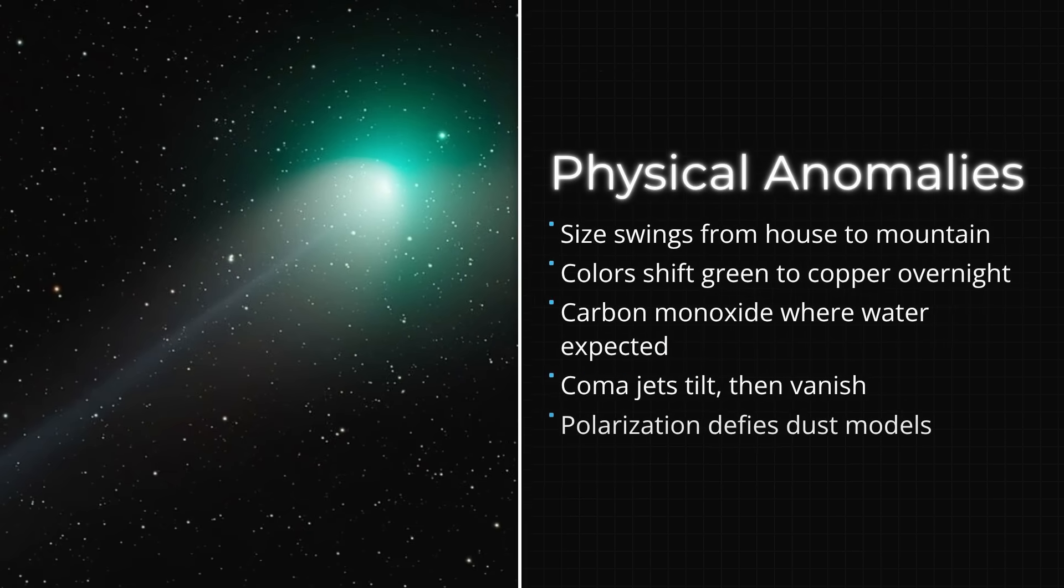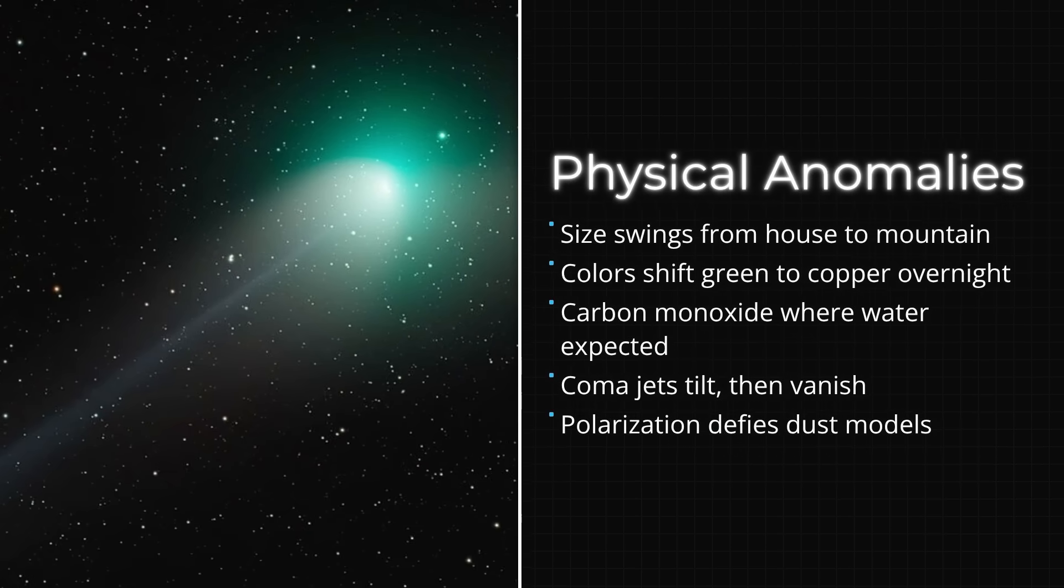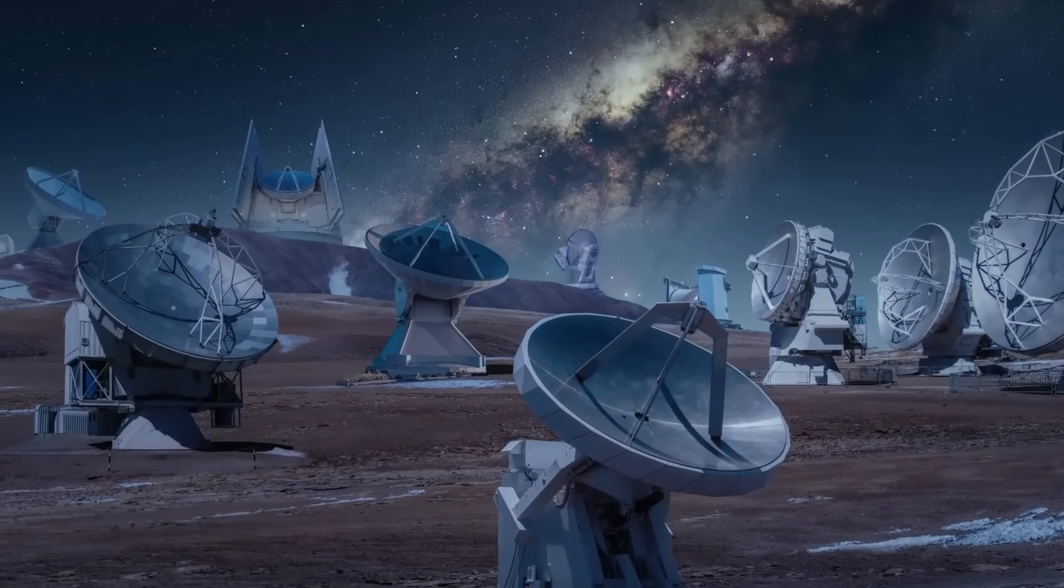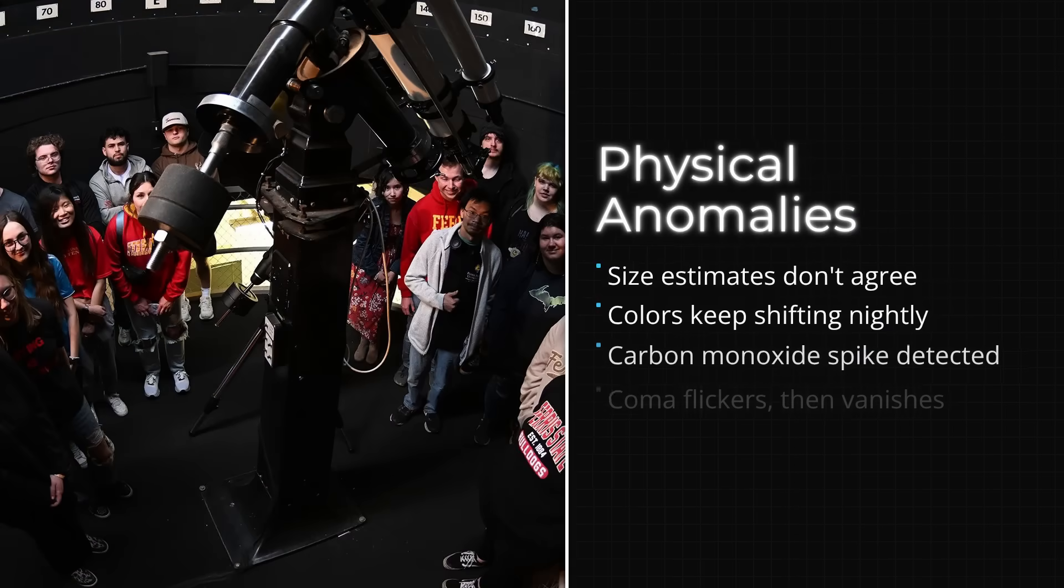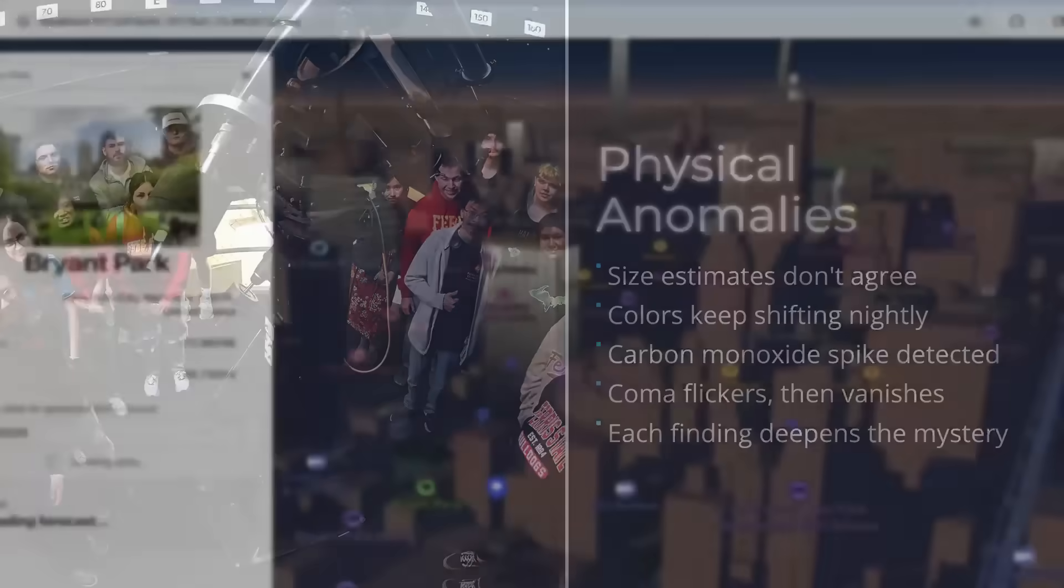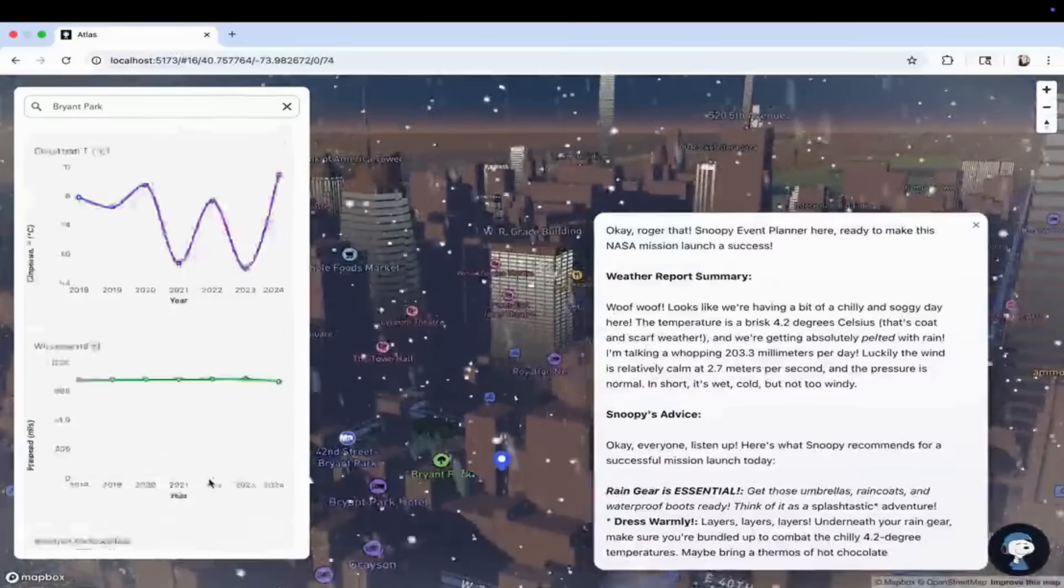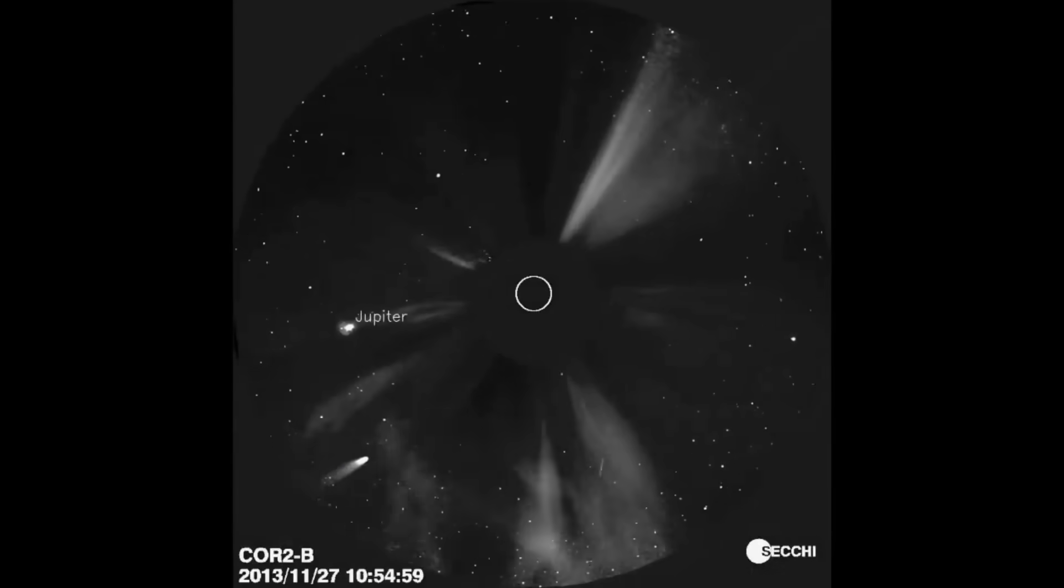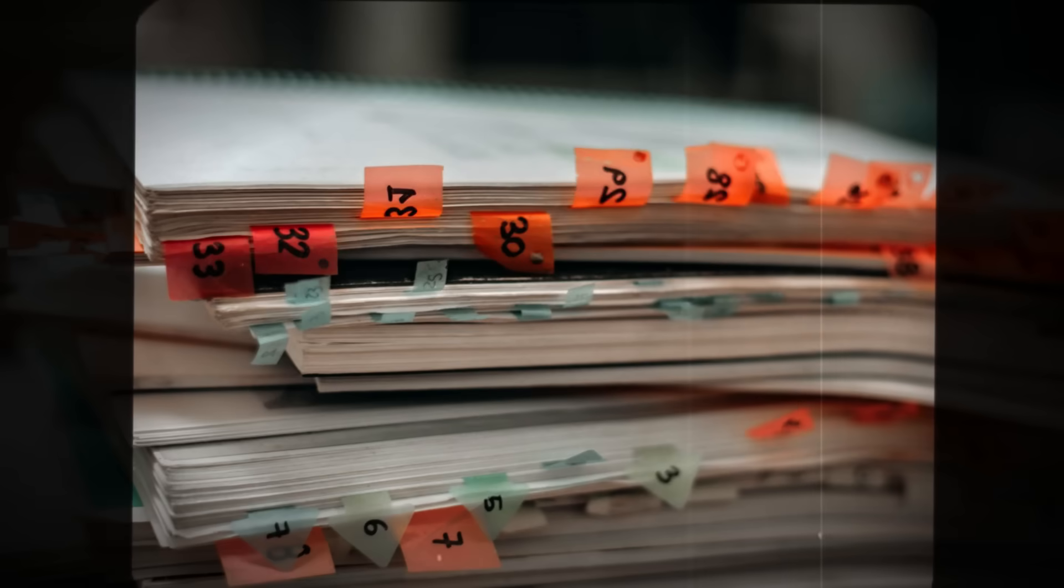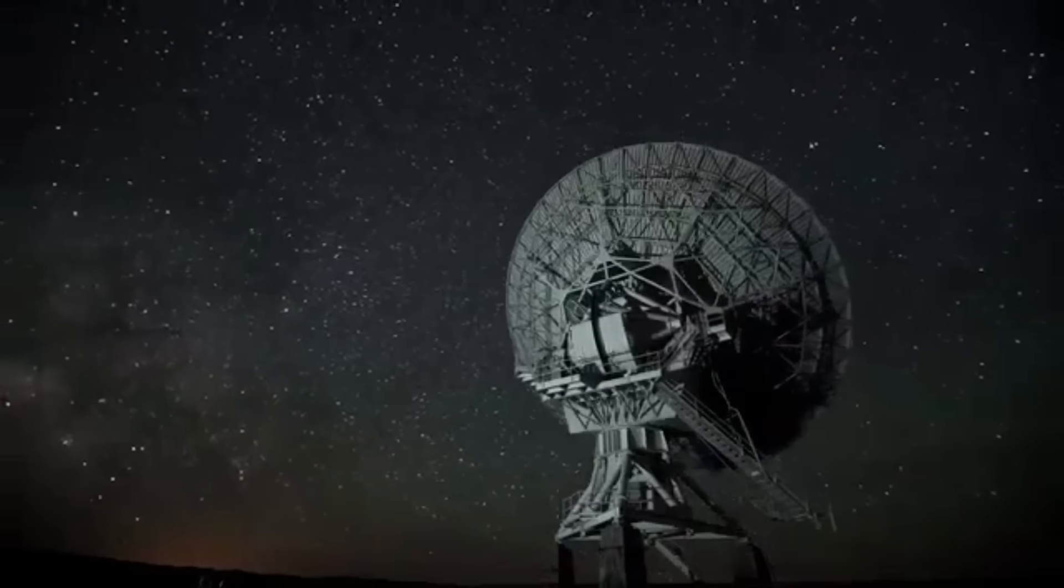Each anomaly—size, color, chemistry, polarization, coma geometry—has drawn the attention of a sprawling, loosely coordinated observer community. Professional astronomers, amateur sky watchers, planetary scientists, and instrument specialists have converged in digital forums, racing to decipher the object's secrets before technical limits and the Sun's glare impose silence. Their findings, arguments, and unanswered questions now set the stage for a deeper confrontation with the limits of our instruments and the boundaries of current cometary science.